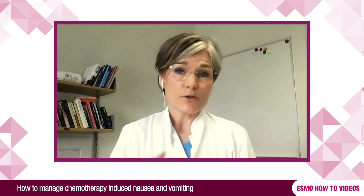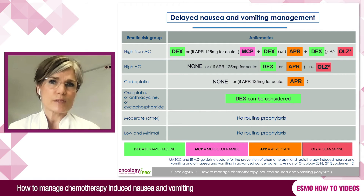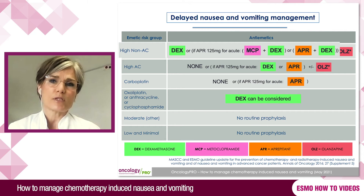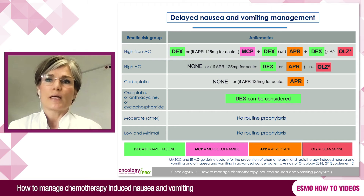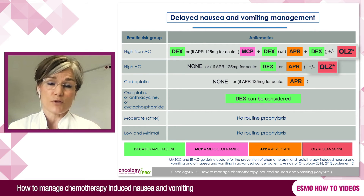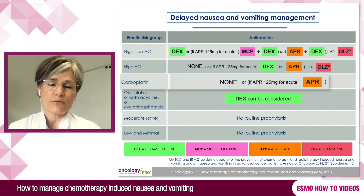Now let's look at the delayed phase. Patients receiving highly emetogenic chemotherapy should receive dexamethasone for three to four days. Depending on the NK1 receptor antagonist used for the acute phase, there are different options. Olanzapine can be used as an add-on if nausea is of special concern, and this applies also for patients receiving anthracycline and cyclophosphamide. Patients receiving carboplatin should not have routine prophylaxis in the delayed phase.